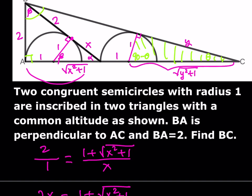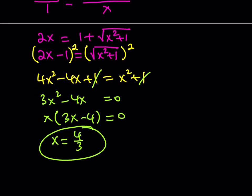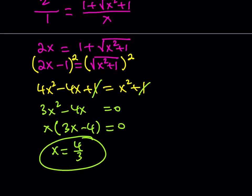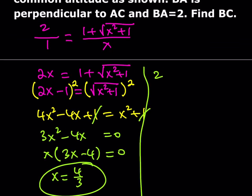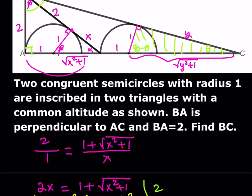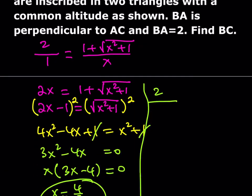We can use similarity. The largest triangle has 2 across from theta, and in the smaller one, theta corresponds to 1, so we again have the 2-to-1 ratio. But this time we're comparing different triangles.